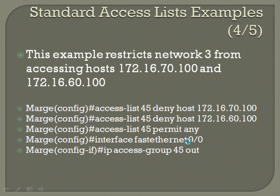You have to have at least one permit statement in any ACL or it's going to block everything. An implicit deny statement that we don't have to configure follows that, and then we're going to apply it to interface FastEthernet 0/0 with IP access-group 45 out — so outbound on that interface.